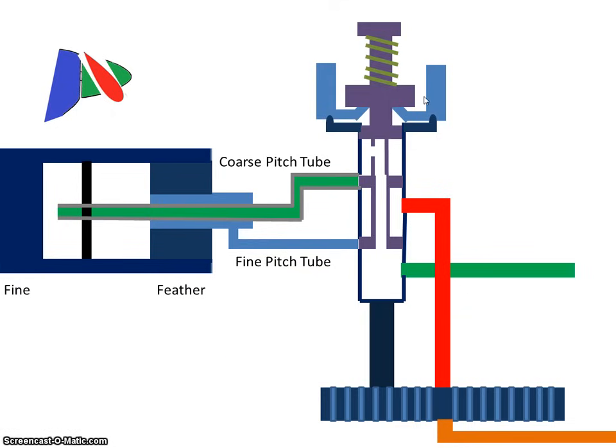Here we have a schematic of the propeller. We have the governor itself, which is made up of a speeder spring, a pilot valve, some flyweights, and we have a gear-driven pump which supplies engine oil.